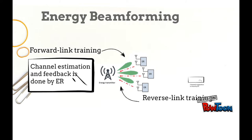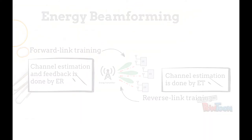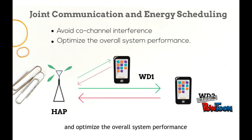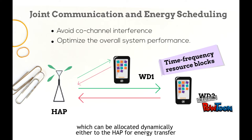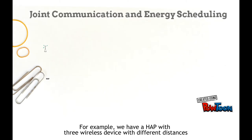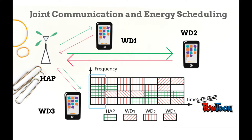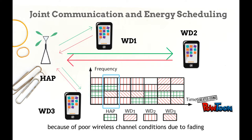For reverse link training, channel estimation is done by ET without any feedback from the ER. Joint communication and energy scheduling is designed to avoid co-channel interference and optimize overall system performance. It uses a technique of time-frequency resource blocks which can be allocated dynamically either to the HAP for energy transfer in the downlink or to the wireless device (WD) for information transmission in the uplink. For example, with one HAP and three wireless devices at different distances, performance is improved by allocating more resource blocks to the far user WD2 and fewer to the near user WD1. It can also occur that no transmission is scheduled at some resource blocks due to poor wireless channel conditions from fading.